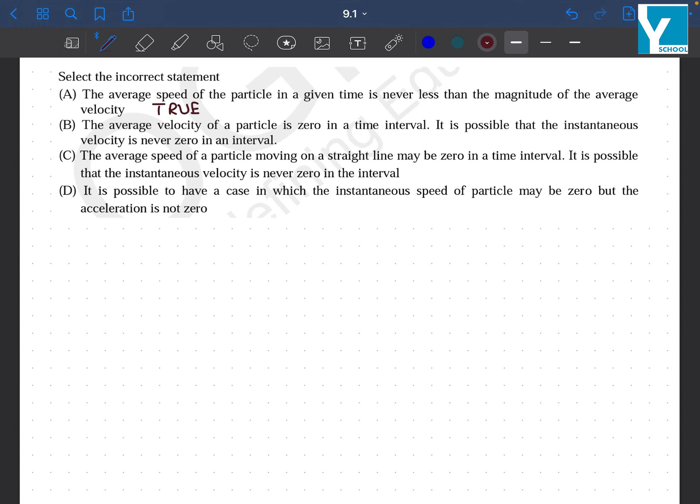Average velocity of a particle is zero in a time interval. It is possible that the instantaneous velocity is never zero in an interval. This is also true. It can go around in a circle.